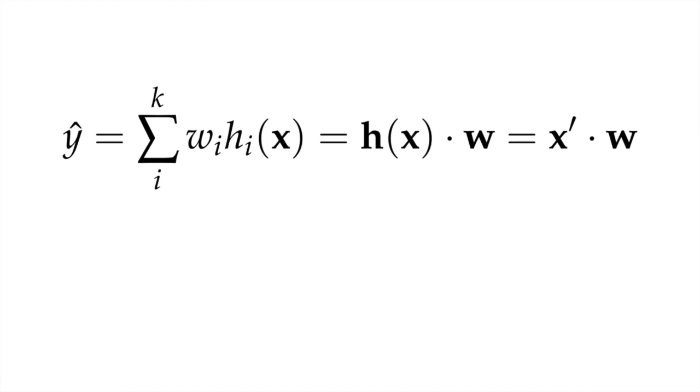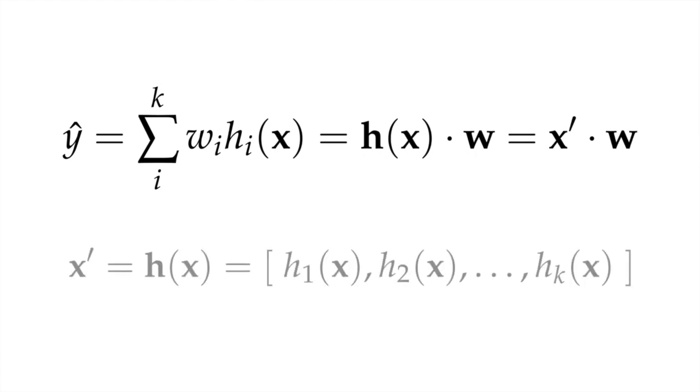We might denote this like this. In this case the model is still fitting a hyperplane to the data, but it's fitting it to a transformed data vector which we might call x prime. This transformed vector x prime occupies a different feature space with a different basis. The new space is typically higher dimensional, although strictly it doesn't have to be, and so this is known as a basis expansion. It can be useful to think of the basis as a dictionary of elements that the model can combine to build the output that it's looking for.